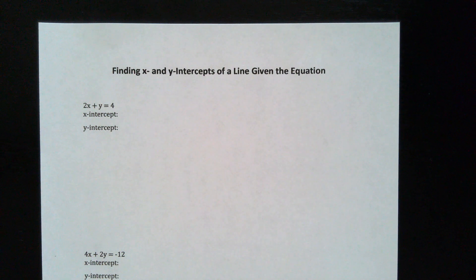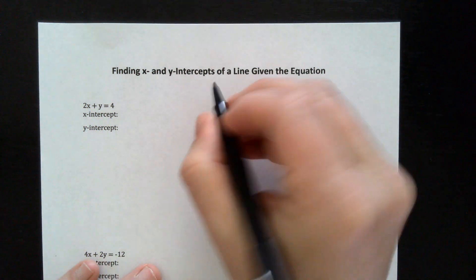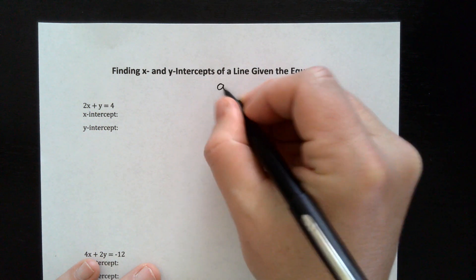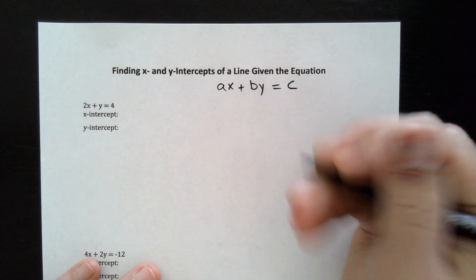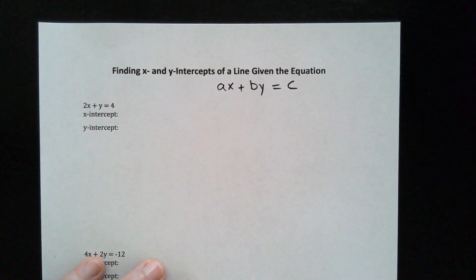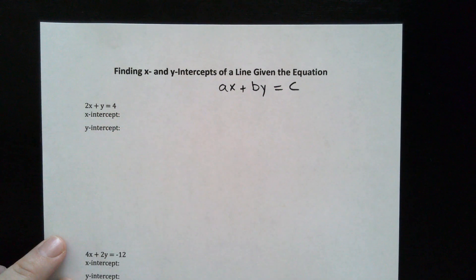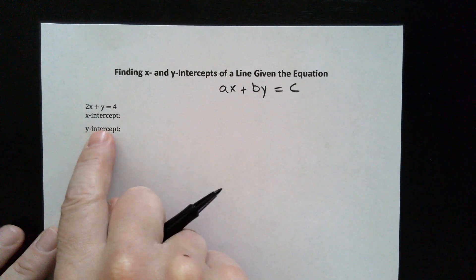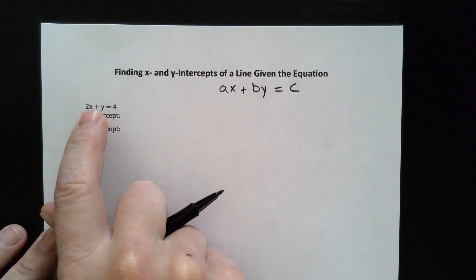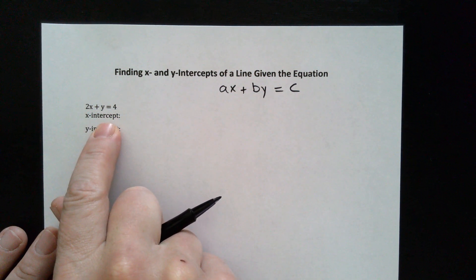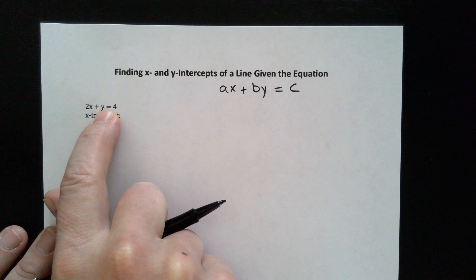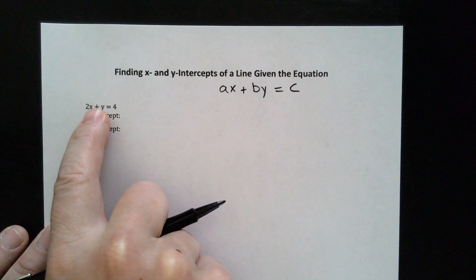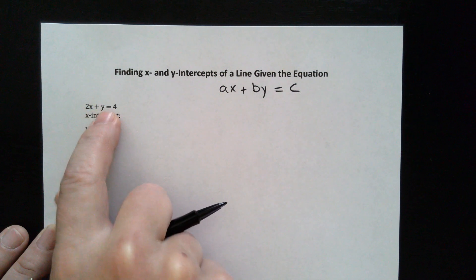In this video, we'll be finding x and y intercepts of the line given the equation. These equations are going to be written in standard form, which is ax plus by equals c. We want to find the x and y intercepts of each one. We're going to set the opposite variable equal to zero. For the x intercept, we set y equal to zero and solve for x. To find the y intercept, we set the x term equal to zero and solve for y.